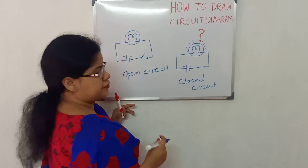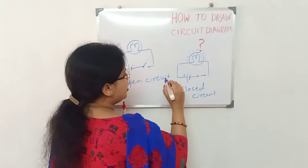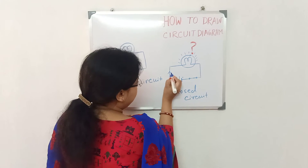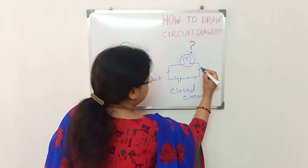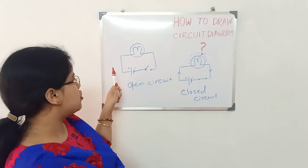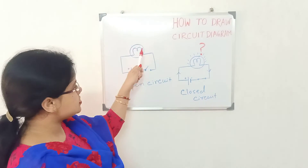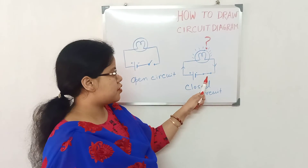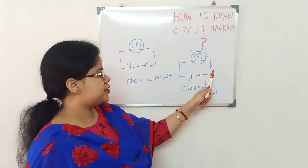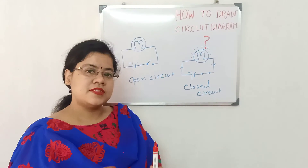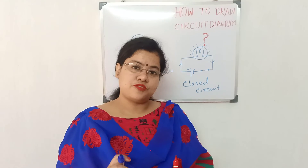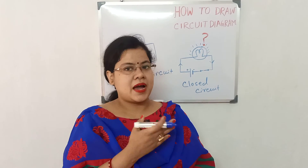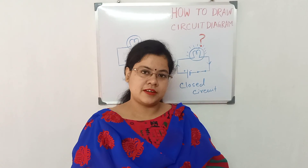Whenever electric current flows through a closed circuit, the direction of flow is always from the positive terminal to the negative terminal of the cell. With this arrow, we can show the direction of flow of electric current. This arrow will not be shown in an open circuit because electricity is not flowing, the switch is off, and the bulb is not glowing. Here, switch is on and bulb is glowing, and we are also showing the direction of flow of electricity. This is how simply we can draw a circuit diagram — instead of drawing a bulb, cell and everything each time, we can represent it simply by this circuit diagram. I hope you all have understood. Thank you.